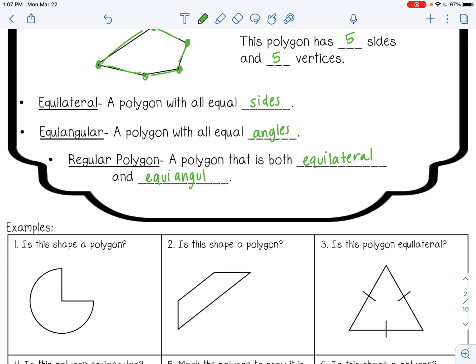So it has all equal sides and angles. An example of that would be a square. All the sides are the same. All the angles are 90 degrees. So it's a regular polygon.